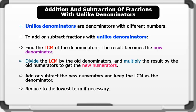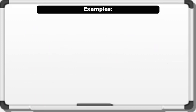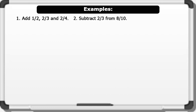Then reduce to the lowest term if necessary. Now let's see some examples. Example 1: add 1 over 2, 2 over 3, and 2 over 4. Example 2: subtract 2 over 3 from 8 over 10.